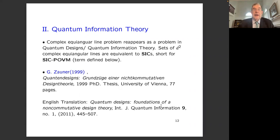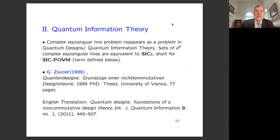The connection with quantum information theory arose in a problem of finding quantum analogues of designs for non-abelian groups, and the maximal sets of complex equiangular lines. That notion is equivalent to the notion of SIC-POVM. This appeared in the thesis of Zauner in 1999 at the University of Vienna. Because of the development of this subject, that thesis became much more important, and it has been translated to English in the Journal of Quantum Information in 2011.